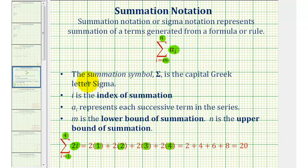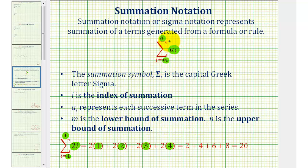More formally, the summation notation symbol is the capital Greek letter sigma. The variable i is called the index of summation. A sub i represents each successive term in the series. m, the starting value of i, is called the lower bound of summation. And n, the last value of i, is called the upper bound of summation.